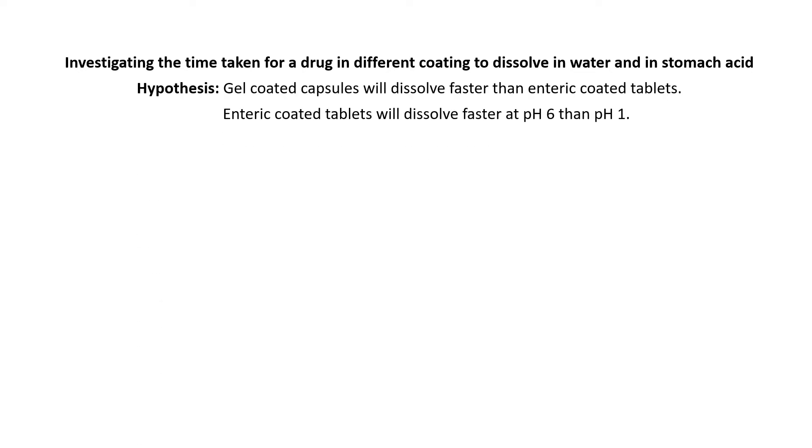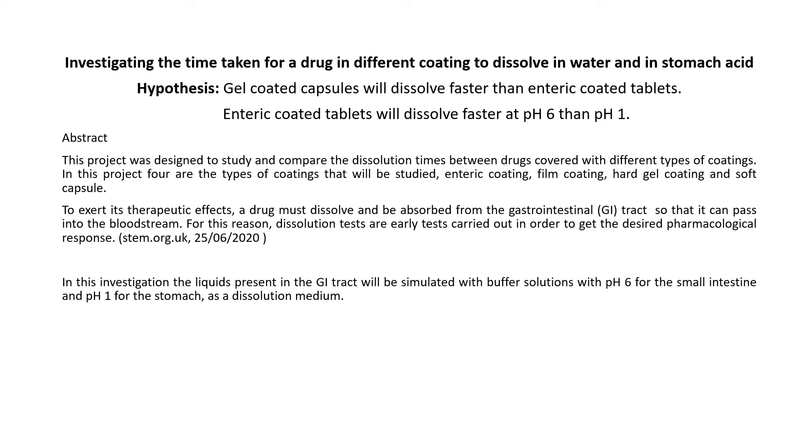Their hypothesis was: gel coated capsules will dissolve faster than enteric coated tablets, and enteric coated tablets will dissolve faster at pH 6 than pH 1. Both of these can be tested through the methodology — it is possible to see whether the capsules dissolve faster than the tablets, and at which pH those tablets dissolve faster, and therefore determine whether the hypothesis can be accepted or rejected. That is what you need to think when you write your hypothesis: can it be tested? It's not a title — it's something that can be tested using your experiment.